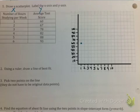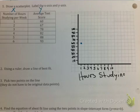Once we have our graph set up, let's just add our labels so we have hours studying. And on the Y axis we have test scores.